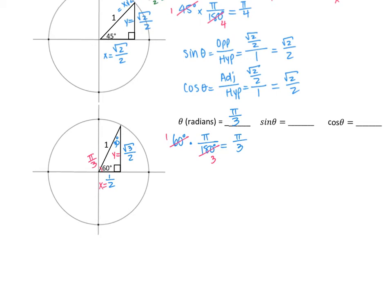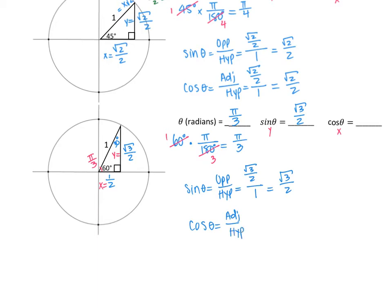Let's prove the trig values using trig identities. Sine of 60 degrees is opposite over hypotenuse: the square root of 3 over 2, over 1 — so sine equals the square root of 3 over 2. Cosine of 60 degrees is adjacent over hypotenuse: one-half over 1 — so cosine equals one-half. Sine is the y value and cosine is the x value. We have just figured out the first quadrant of the unit circle.